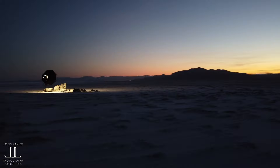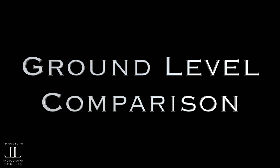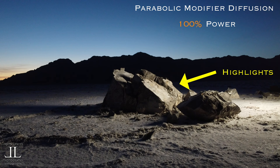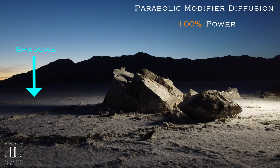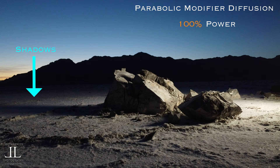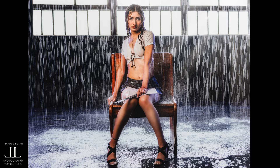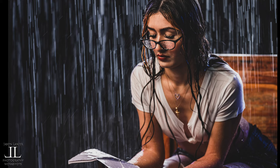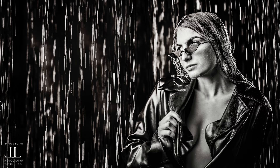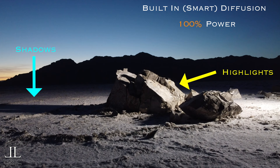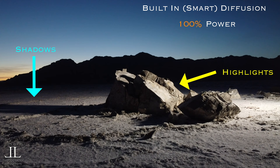Now let's take a look at the same setup from the ground level. First up is the parabolic — pay attention to the highlights on the rocks, as that is how this light will appear on a person's face. Also take a look at the shadows behind the rock; that's how the shadows would appear on a person's neck as fall off. These images here were shot with this exact setup — as you can see there is a very large spread of light and it is very soft, beautiful quality light. With the built-in diffusion you can see the highlights get brighter and the shadows get darker, but it's still very acceptable for portraiture and is especially impressive because it's built-in and isn't using a modifier.